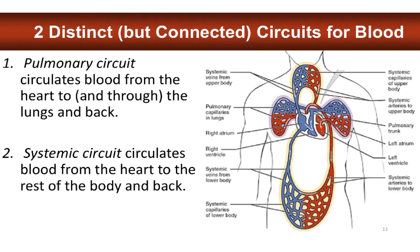Last week when we talked about the respiratory system, we very briefly touched on these two distinct but connected circulation circuits — same thing for blood. The one we focused on last week was the pulmonary circuit, which carries blood from the heart through the pulmonary trunk into the pulmonary arteries into the lungs to pick up oxygen and then come back. Both types of circulation start with a ventricle and end with an atrium. You start with the right ventricle and end with the left atrium in the pulmonary circuit.